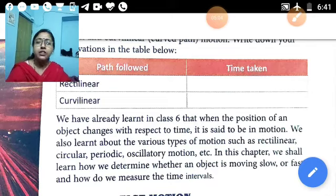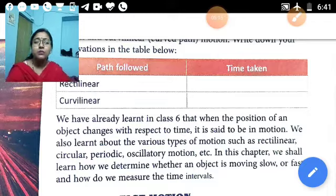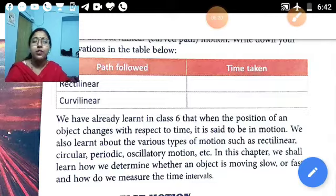And last is the rotational motion. Rotational motion means in which the object moves, rotates on its axis, on a fixed axis. The object moves in a circular pattern. So that is called the rotational motion. For example, the ceiling fan, the blade of the fan moves on its axis. Even the earth rotates on its axis. That is called the rotational motion.